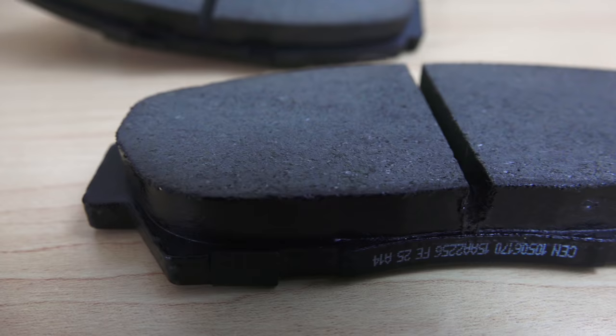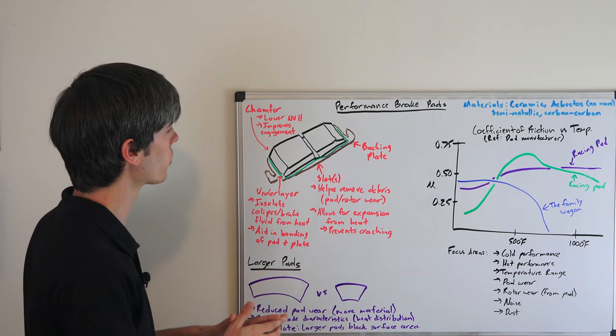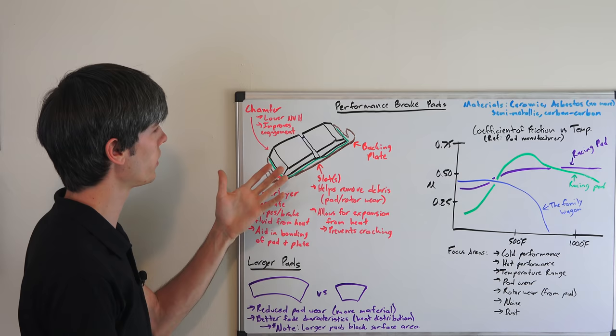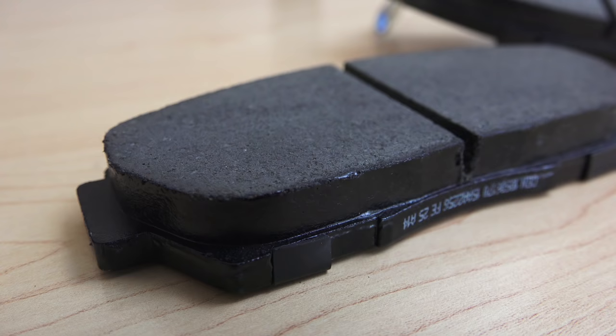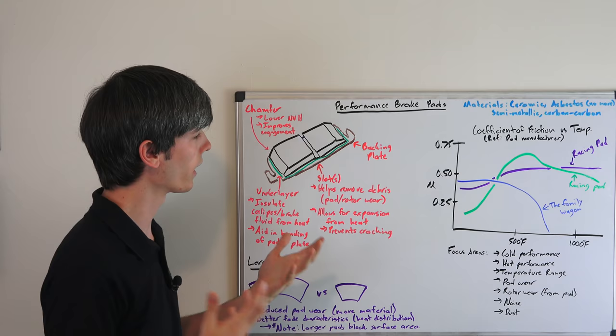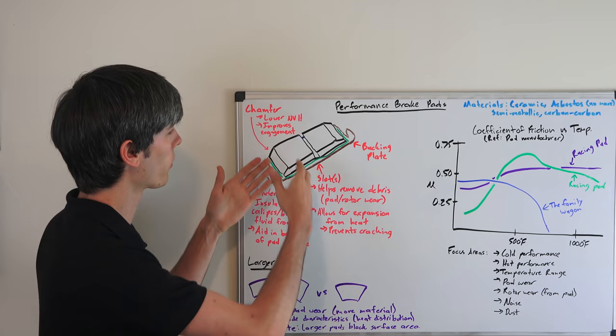So looking at a brake pad here, several things going on, some common features. You may see a chamfer on the ends and that's to improve engagement and also help reduce brake noise. You also may have slots. Pretty much all of them will probably have slots, and this is to help remove debris from the pad or the rotor wearing. And also so that when your pad expands from heating up so much, that prevents cracking within it. So it has a little bit of space to expand.